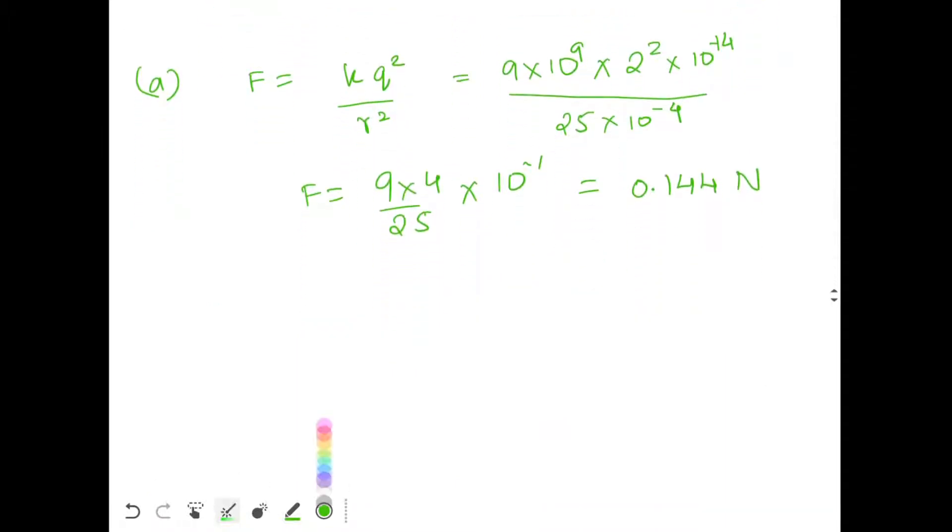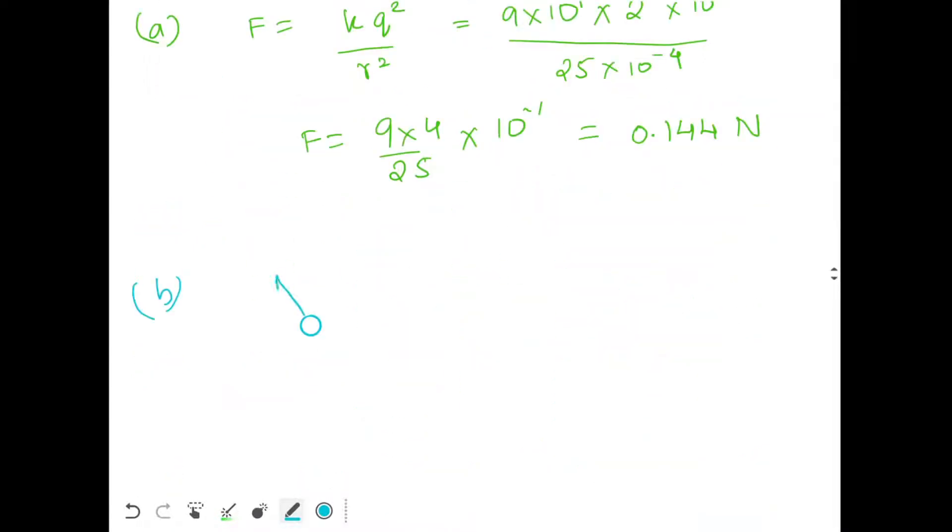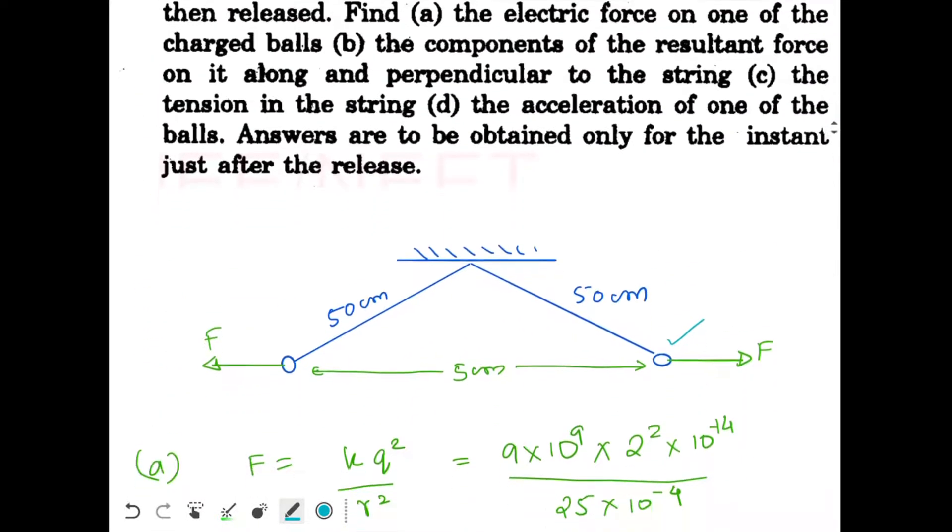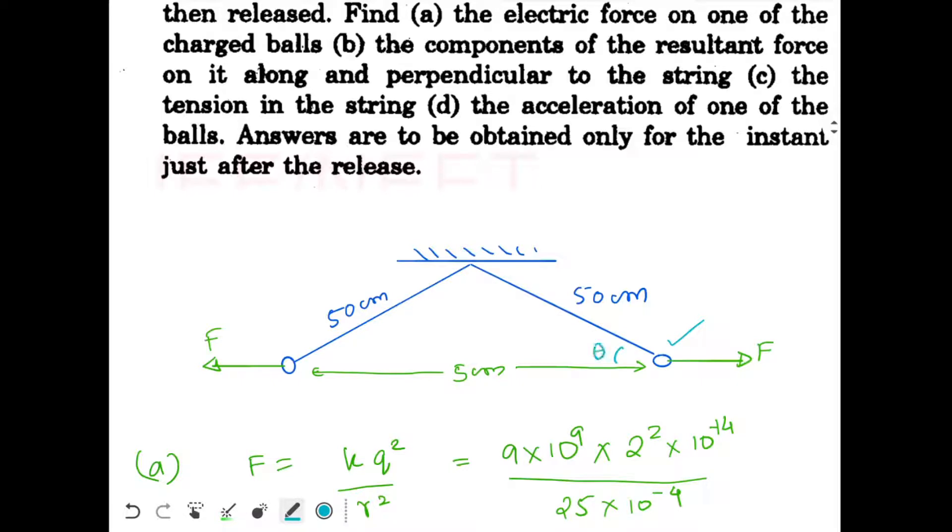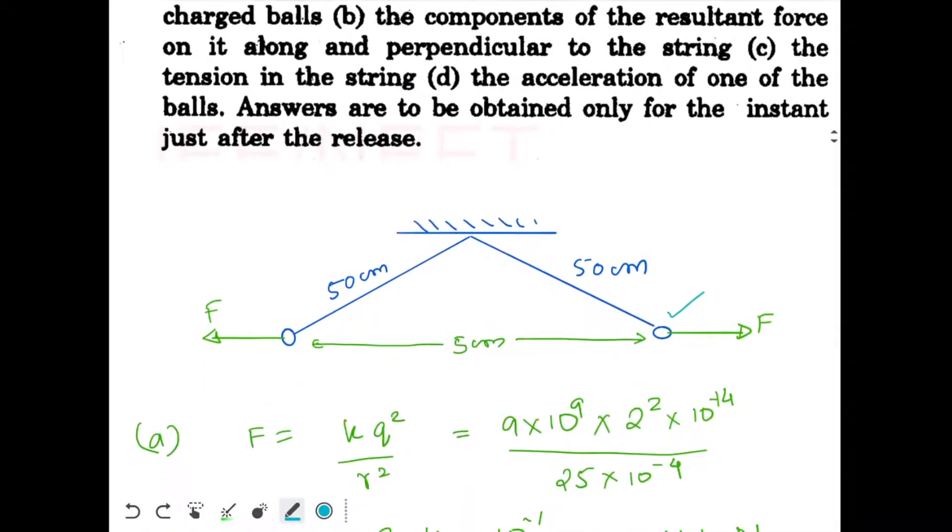So for that let's just draw the FBD again. I am taking this charge. So here I got my tension T. This is the force F and mg downwards. So first of all we need to find the angles. Let's drop a perpendicular from here. This angle is theta.